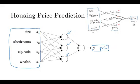So for example, rather than saying this first node represents family size, and family size depends only on the features X1 and X2, right? Instead, we're going to say, well, neural network, you decide whatever you want this node to be, and we'll give you all four input features to compute whatever you want.